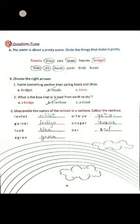The poem is about a pretty scene. Circle the things that make it pretty. Children, here we have to circle the things which make the scene beautiful. So here the answers to circle are: sheep, boats, bridges, trees, sky, clouds. These things make beautiful scenes in the poem.